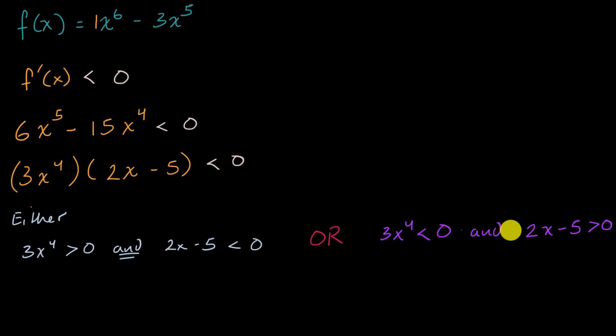And actually, let me stay on the second case first. Are there any situations where 3x to the fourth can be less than zero? You take any number, you take it to the fourth power, even if it's a negative, it's going to become a positive. So you can't get a negative expression right over here. So actually, the second condition is impossible to obtain. You can't get any situation for any x where 3x to the fourth is less than zero. So we can rule this one out.